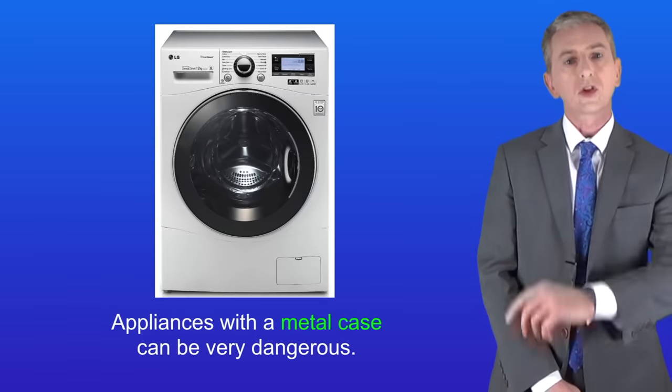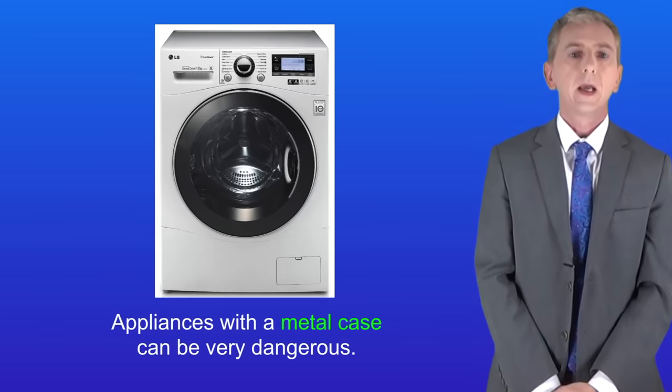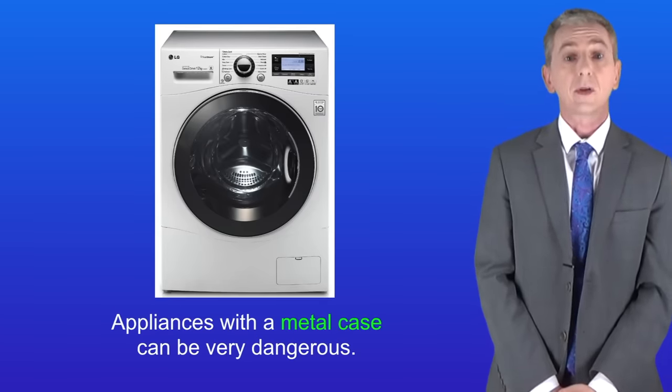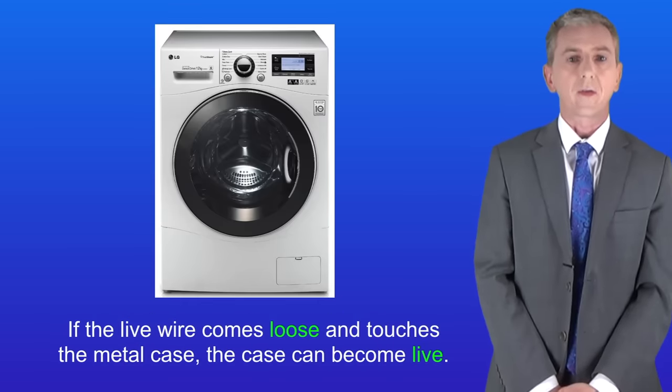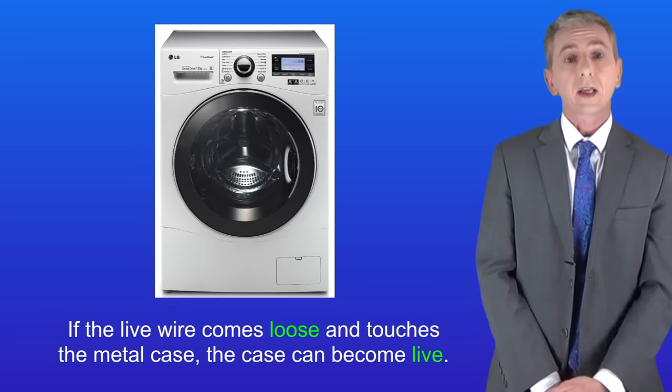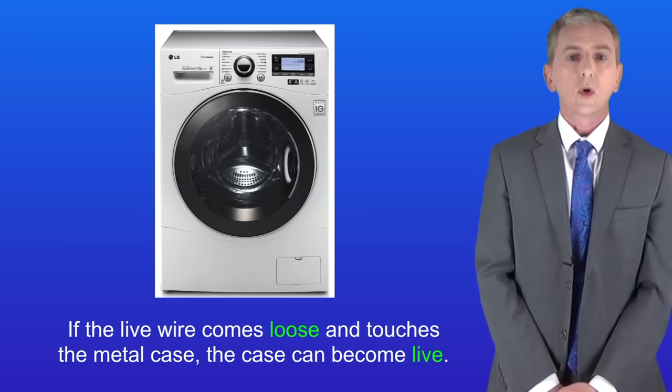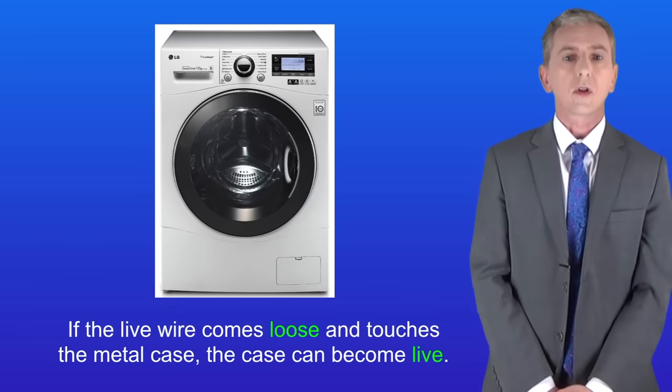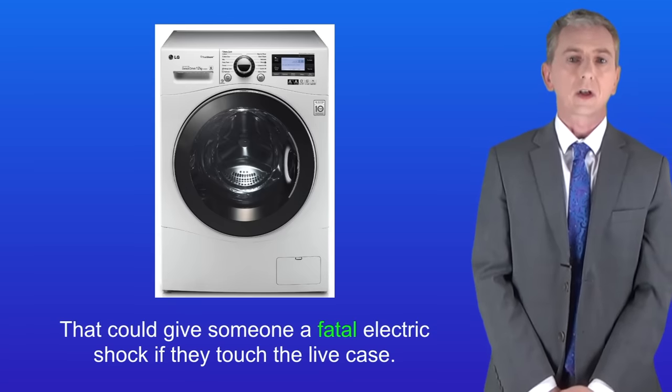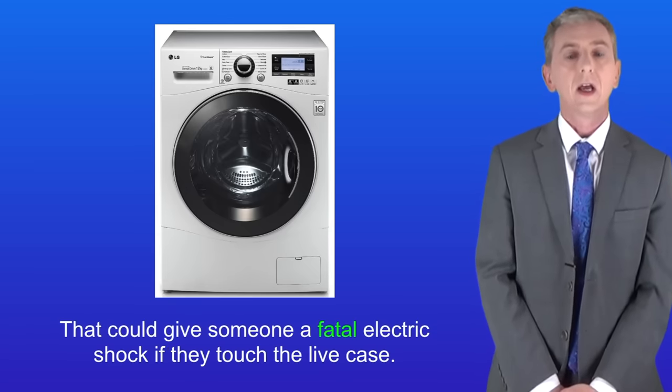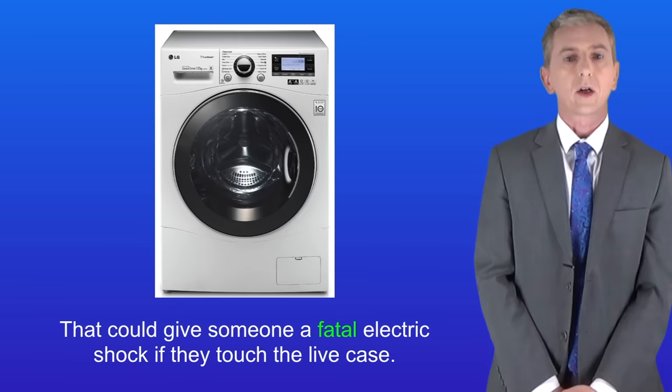I'm showing you here a washing machine with a metal case. Appliances with a metal case can be very dangerous and that's because if the live wire comes loose and touches the metal case the case can become live. In other words it's got a potential difference of 230 volts. Now that could give someone a fatal electric shock if they touch the live case. So this is where the earth wire comes in.